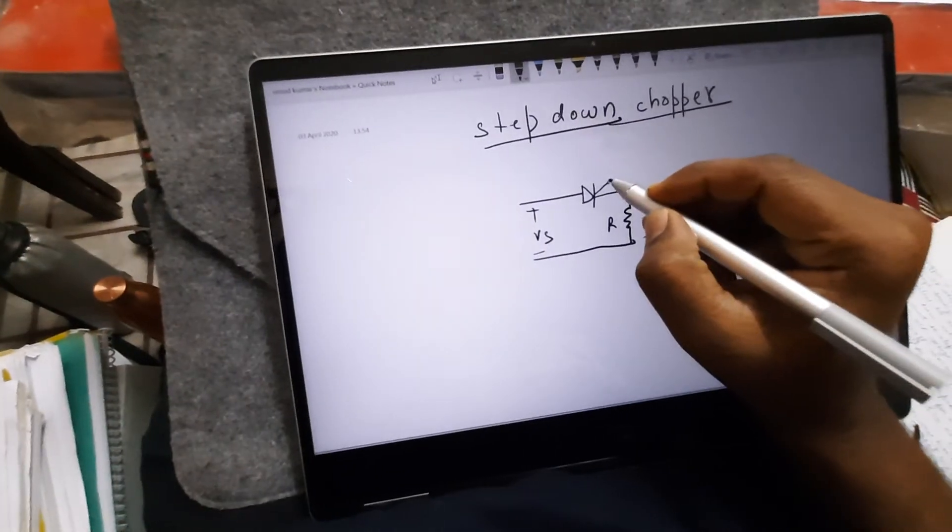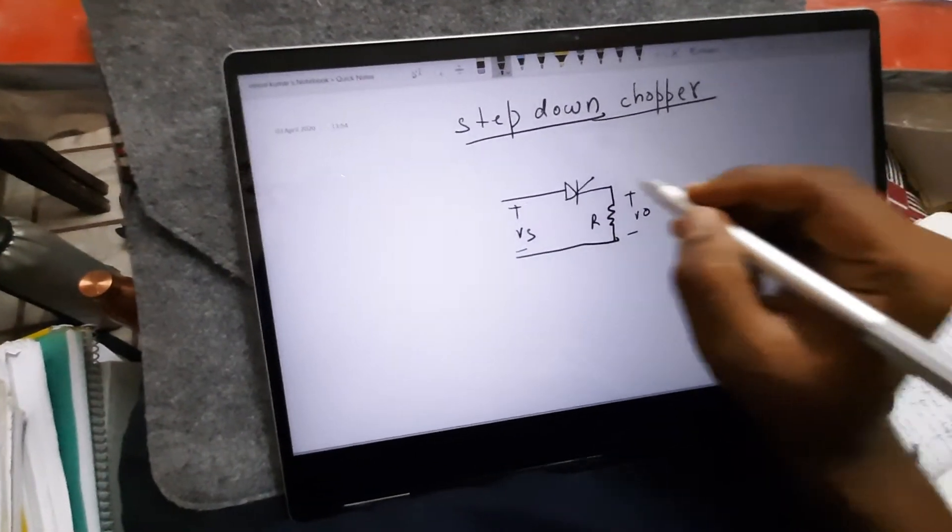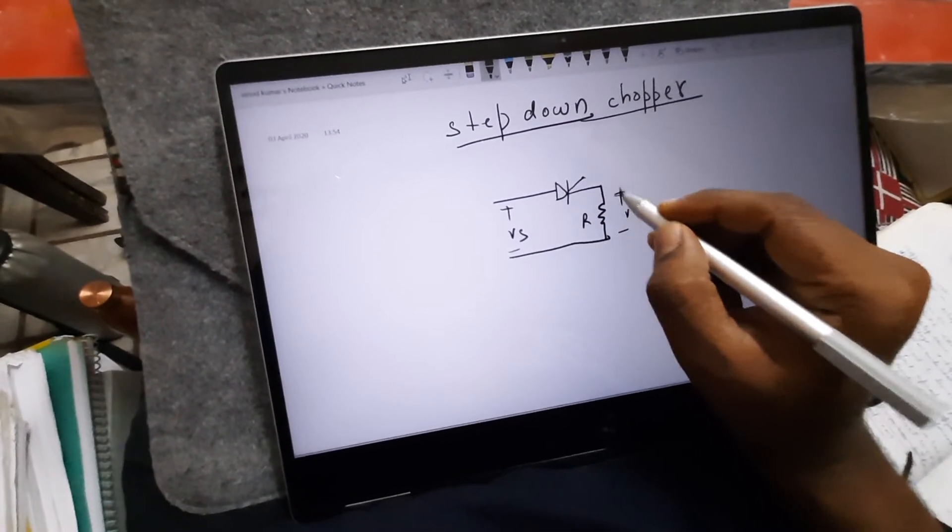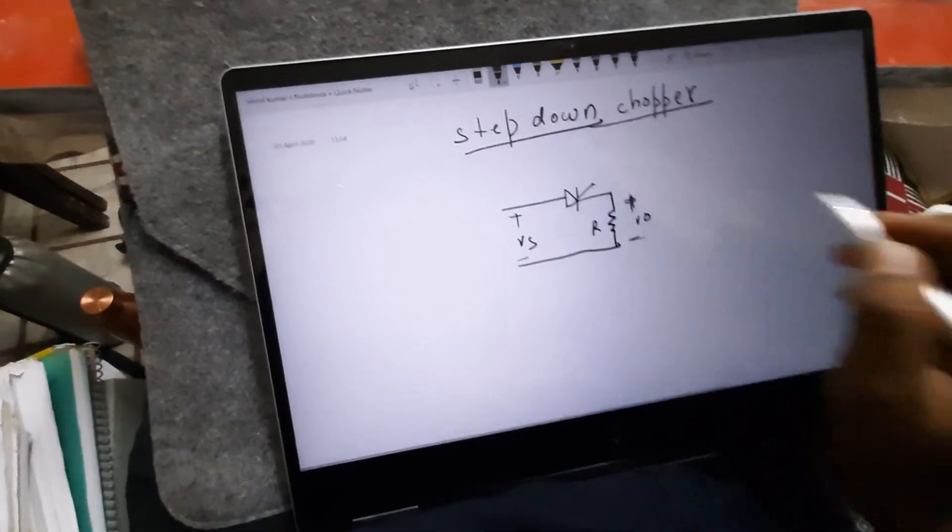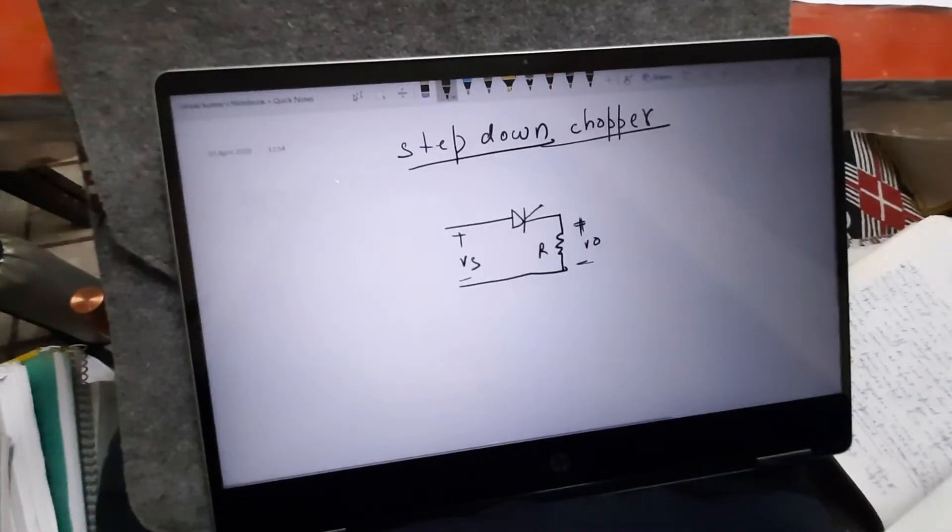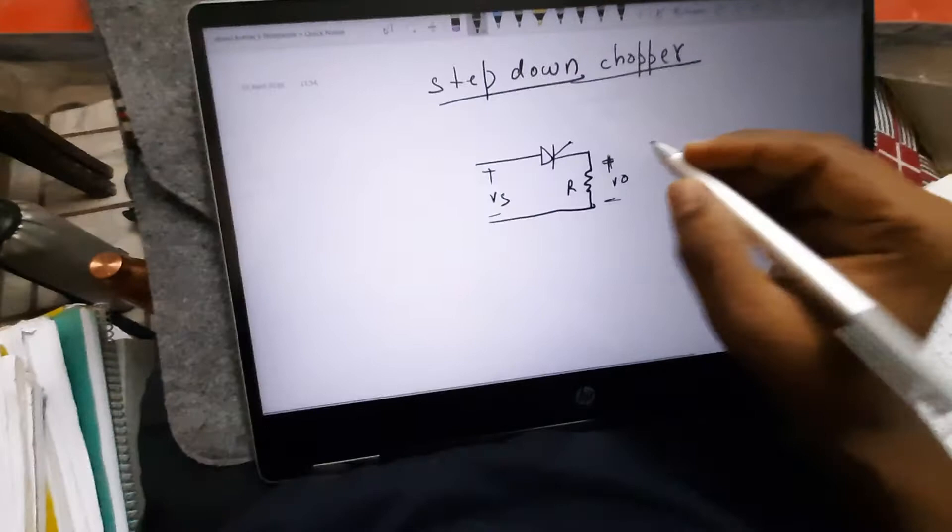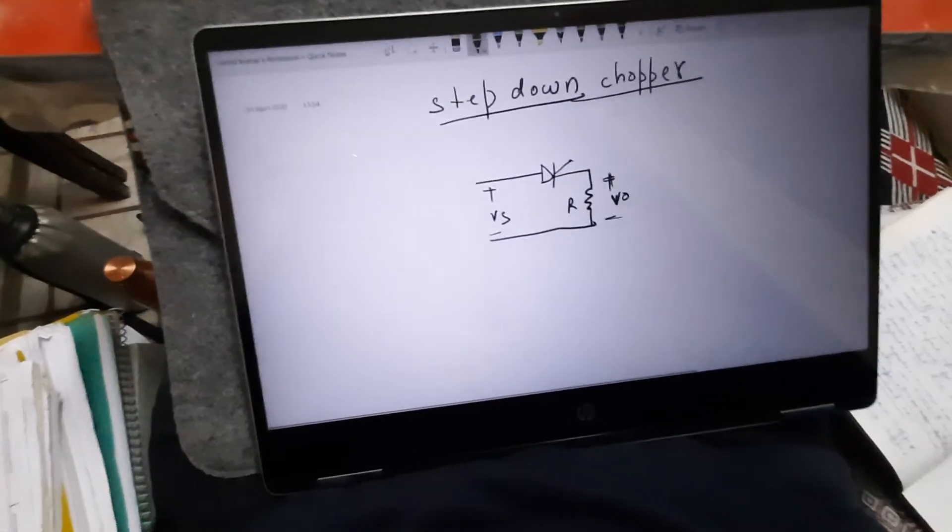So this is the basic diagram of step down chopper where this is the thyristor switch. And for beginning we are taking R load, and let us see how the output V0, how we are getting the output voltage with this switching sequence.